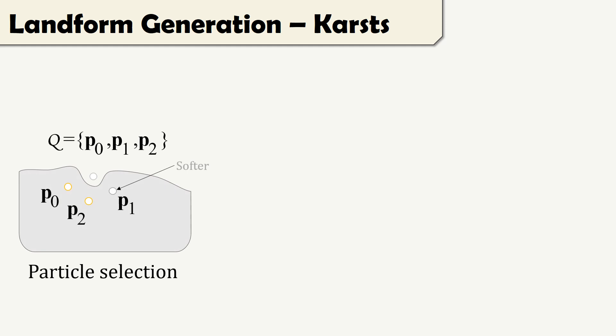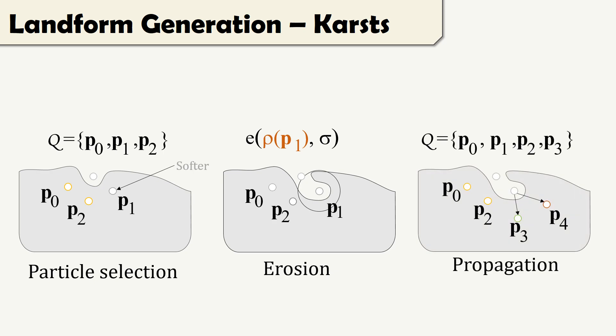Casts are created using an invasion percolation algorithm. First, the selection of positions is made based on the material's softness. Then a primitive is placed and new particle candidates are created. The process is then repeated.